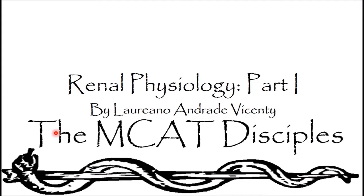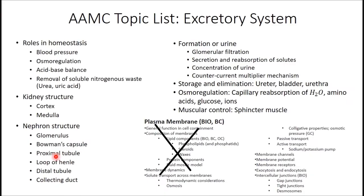Renal Physiology, Part 1, by Laureano Andrade Vicente and the MCAT Disciples. Here is the topic list we're going to go through today. In this Part 1, we'll cover the anatomy of the urinary system and then the basic renal processes. In the next lecture, we'll go through regulation of blood pressure, some pathological conditions, and integrate with the Cardiovascular Physiology lectures. So without further ado, we shall begin.